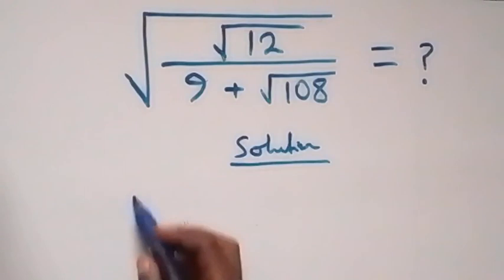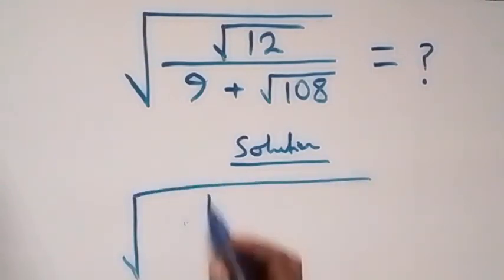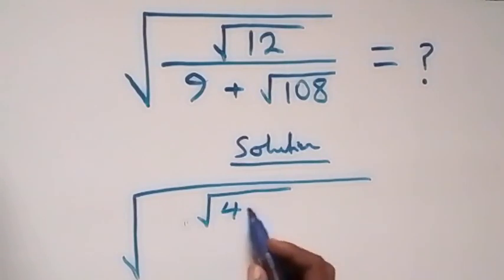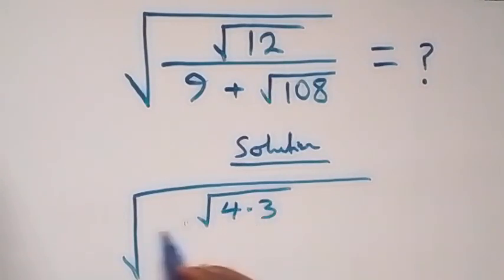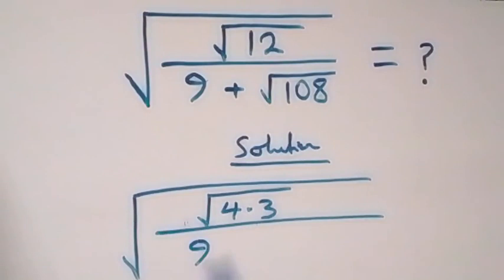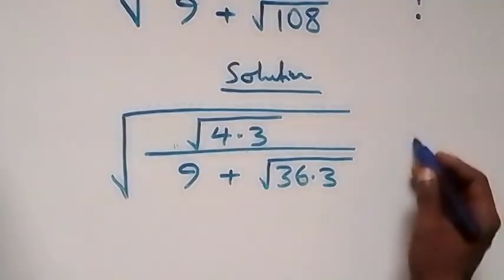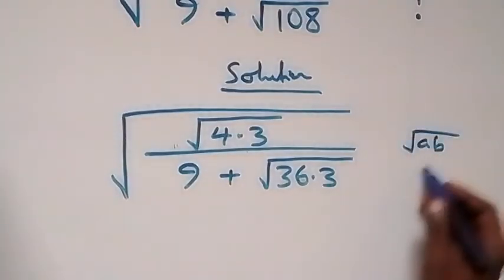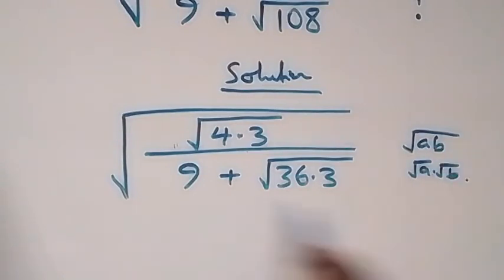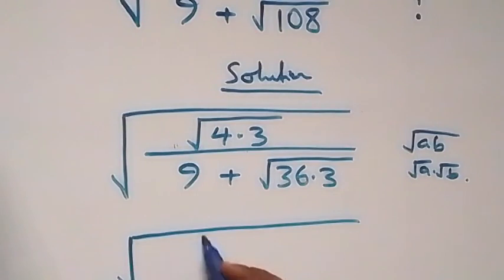We can rewrite this as square root of √4 times 3, divided by 9 plus √36 times 3. Then, using the rule that √(a×b) = √a × √b, we can separate these terms and write it as square root of √4 times √3.